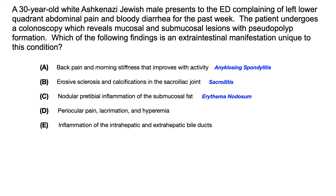Choice D — periocular pain, lacrimation, and hyperemia — is referring to uveitis. Choice E, which was the correct answer, was inflammation of the intrahepatic and extrahepatic bile ducts, which of course refers to primary sclerosing cholangitis.